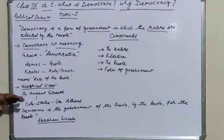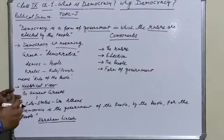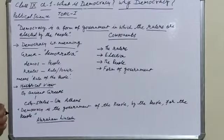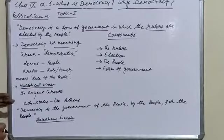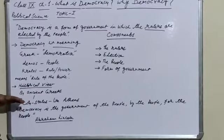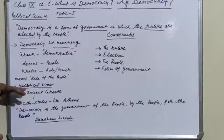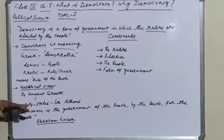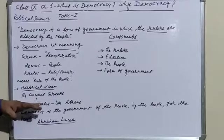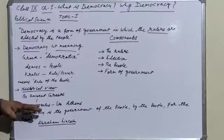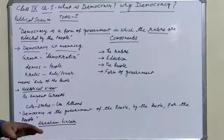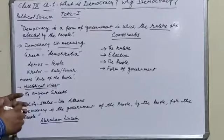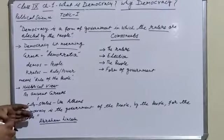If we go back into history to find where this word or type of government originated, we have to look at historical evidence. This word or type of government was first used by the Greeks in their city-states, where the people used to choose the government and the elected representatives would rule.